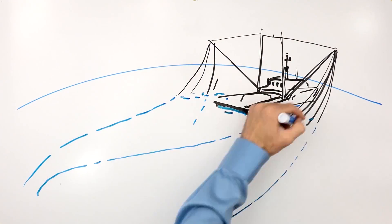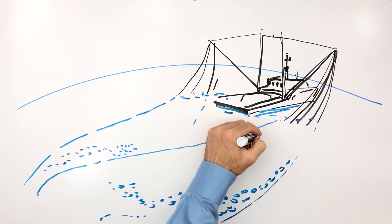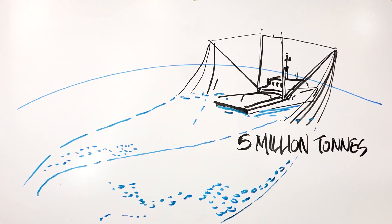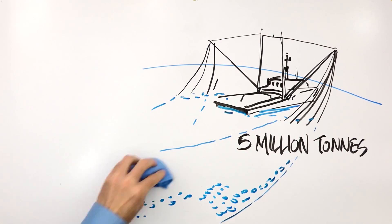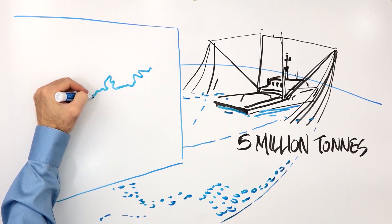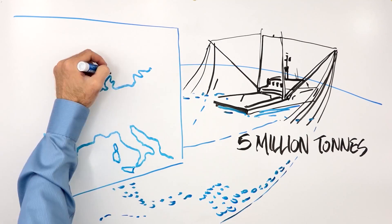The fishing fleets of the European Union catch a lot of fish, around 5 million tons annually. Yet because fishing limits have been set too high, numerous fish stocks are now overexploited.